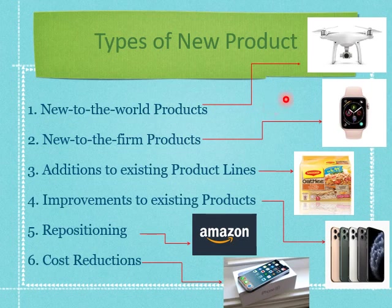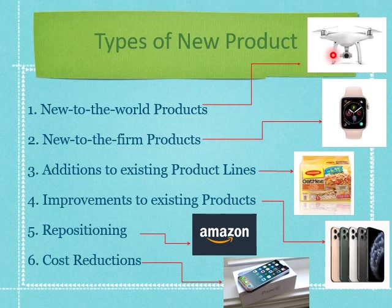A good example of a new-to-the-world product is the drone. Previously, there was no such thing — whoever thought of having something flying without any pilot, being remotely controlled? So, a drone can be considered a product that is new to the world. The second type of new product is new to the firm, which may not be a new product to the world, but to that particular firm.